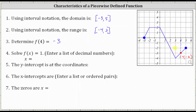Next, we're asked to solve f of x equals one. Here, we are given the function value or y value, and we're asked to find the inputs or x values. We first locate one on the y-axis and then locate the points on the graph where y is equal to one. Notice how there are two of them: on the left, we have the point negative 2.5, comma one, and on the right, we have the point 0.5, comma one. Therefore, the solutions are x equals negative 2.5 or x equals 0.5.